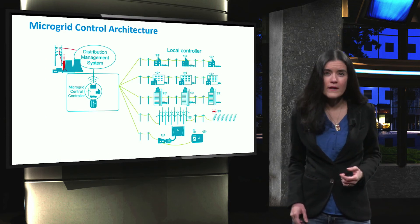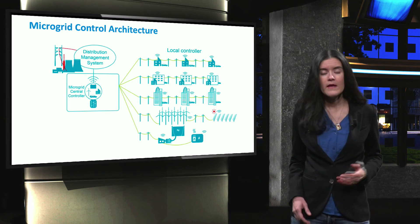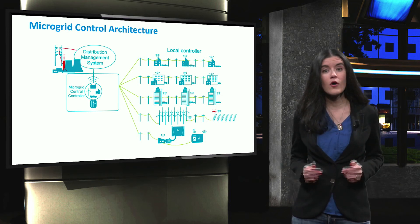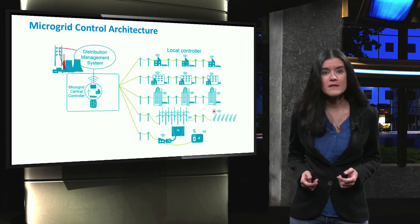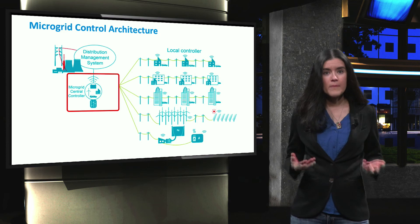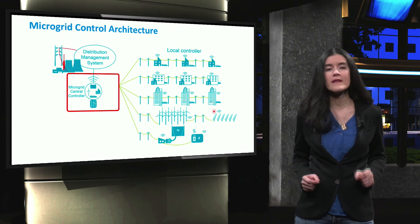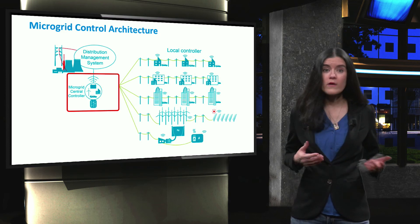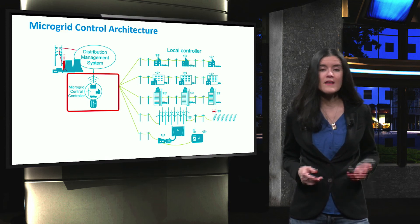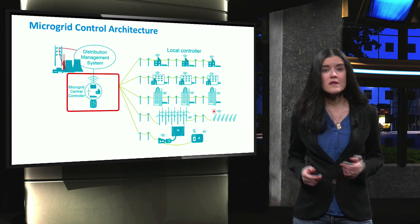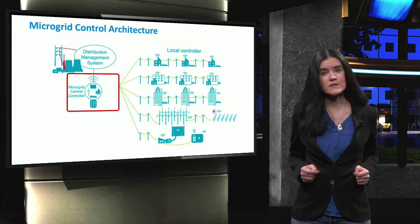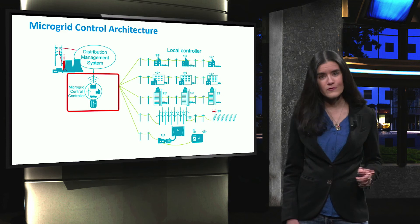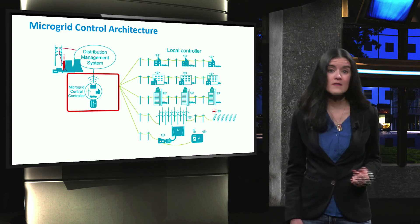A microgrid can be operated in a centralized or decentralized way, depending on the responsibilities assumed by the different control levels. In a centralized control architecture, the main responsibility of maximizing the microgrid value and optimizing its operation lies with the microgrid central controller. The central controller determines the amount of power that the microgrid should import from the upstream distribution system, optimizing local production or consumption capabilities using market prices of electricity and gas, grid security concerns, and ancillary services requests by the distribution system operator. We will discuss the main advantages and disadvantages of centralized and decentralized approaches next week, when we focus on the internal microgrid control.